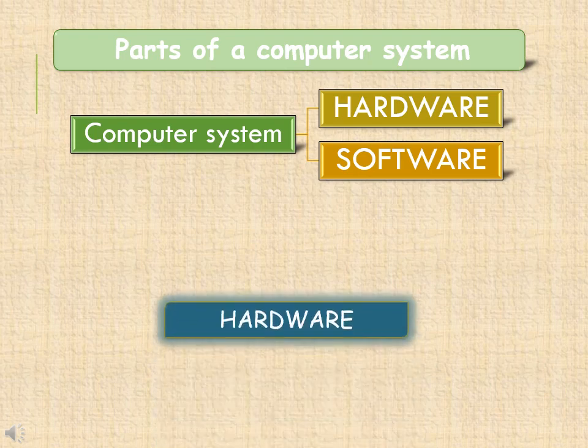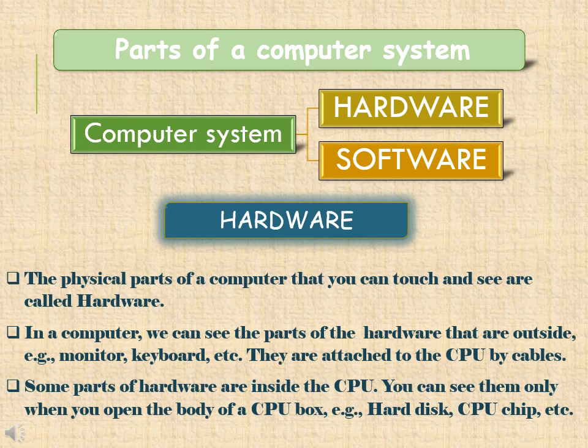Hardware. The physical parts of a computer that you can touch and see are called hardware. Examples include mouse, CPU, monitor, keyboard, printer, etc. These devices are attached to the CPU by means of a cable.